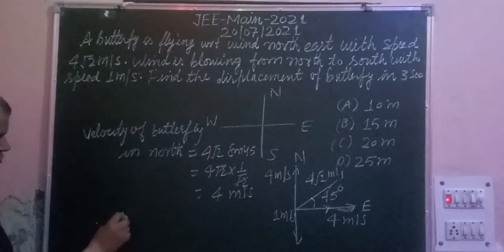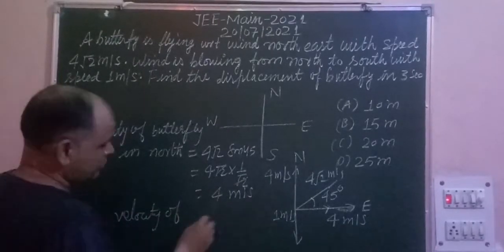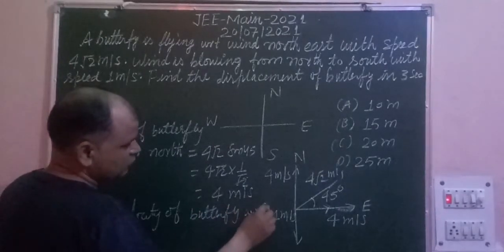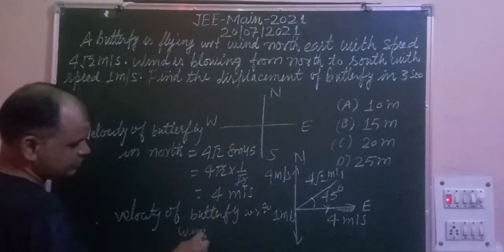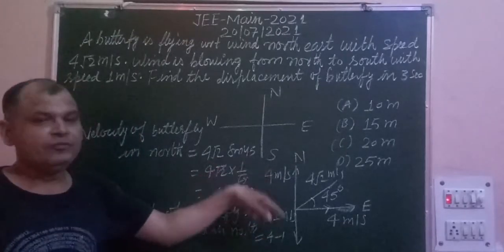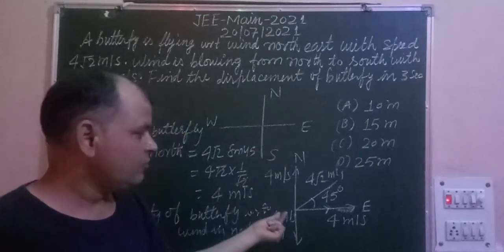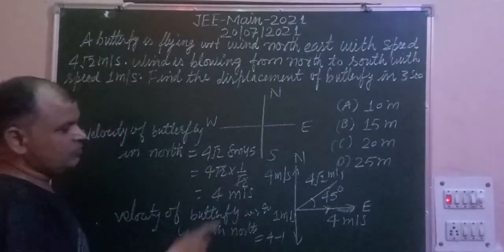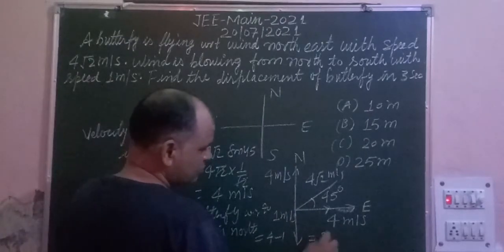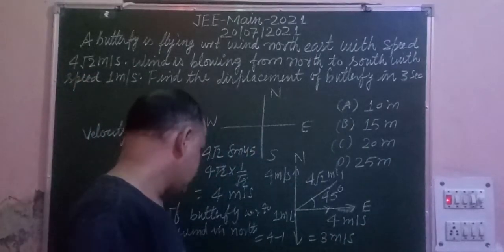Now wind is blowing. So velocity of butterfly with respect to wind in North equals 4 minus 1. Because wind is blowing in the North to South direction and the butterfly is flying from South to North with 4 meters per second, and the speed of wind is 1 meter per second. So we get 3 meters per second as the velocity of the butterfly in the North direction with respect to wind.